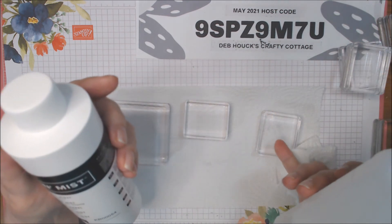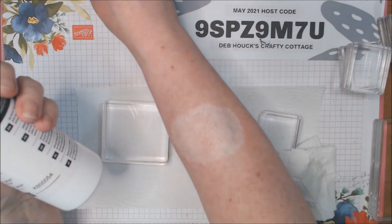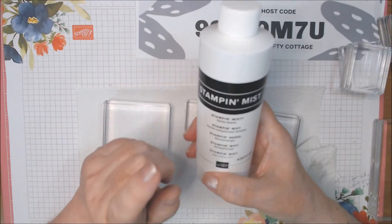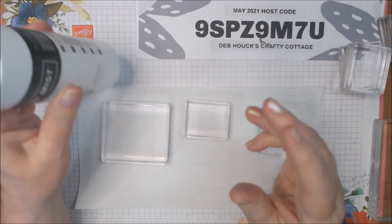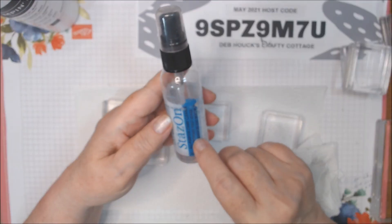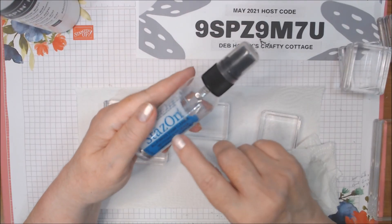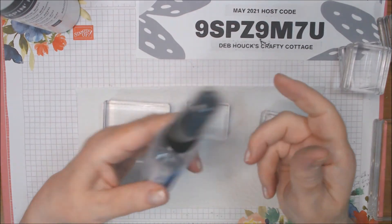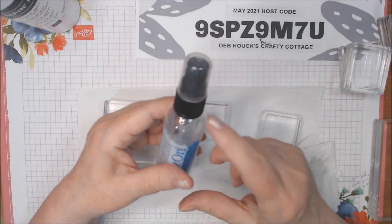The Stampin' Mist cleaner by Stampin' Up works also, you just have to give a little more elbow grease. And then for your StazOn inks, this StazOn cleaner, Stampin' Up does sell that as well. It might be a slightly different bottle, I can't remember. I have to order it and find out.